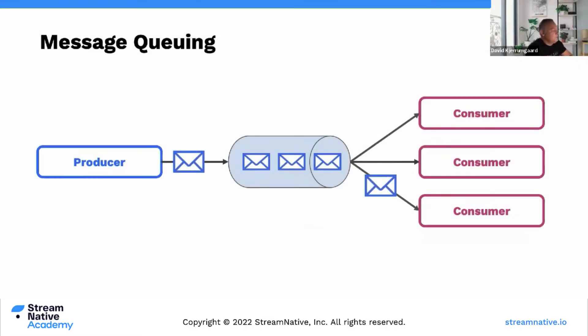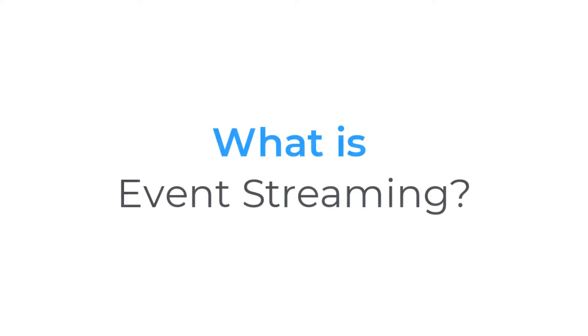With message queuing, you have one producer that puts messages into a topic, and there can be multiple consumers on the other end, but only one of those consumers will get that message — there's no guarantee all of them get it with a queuing use case.